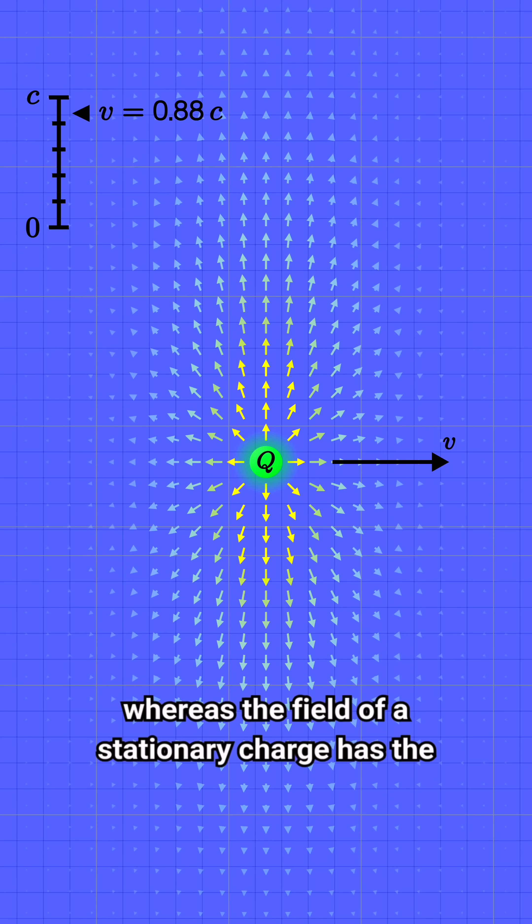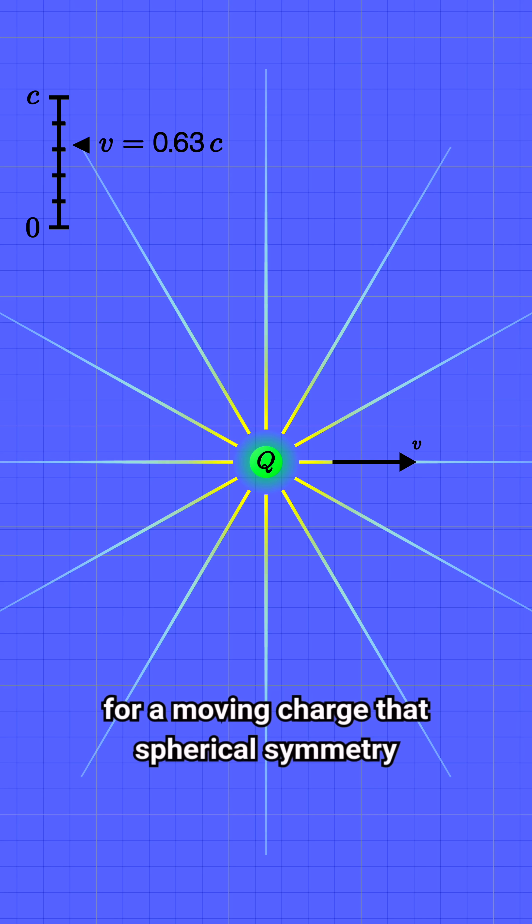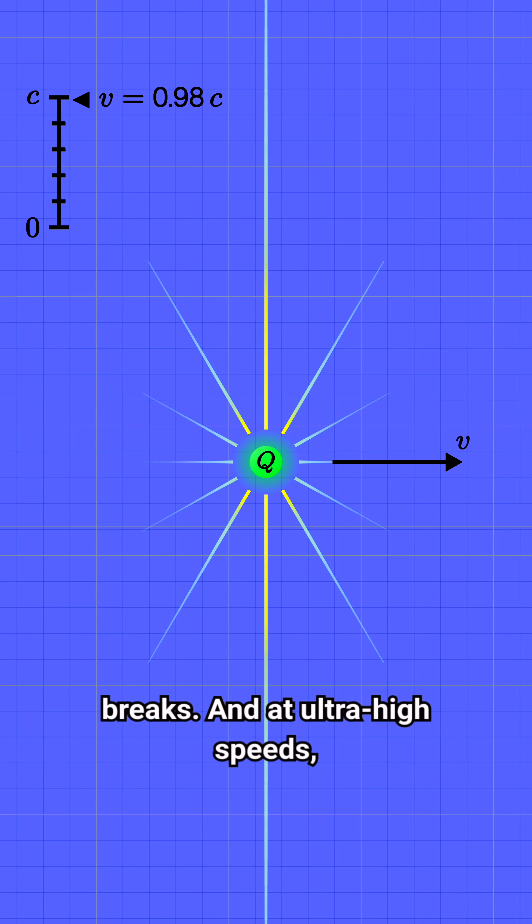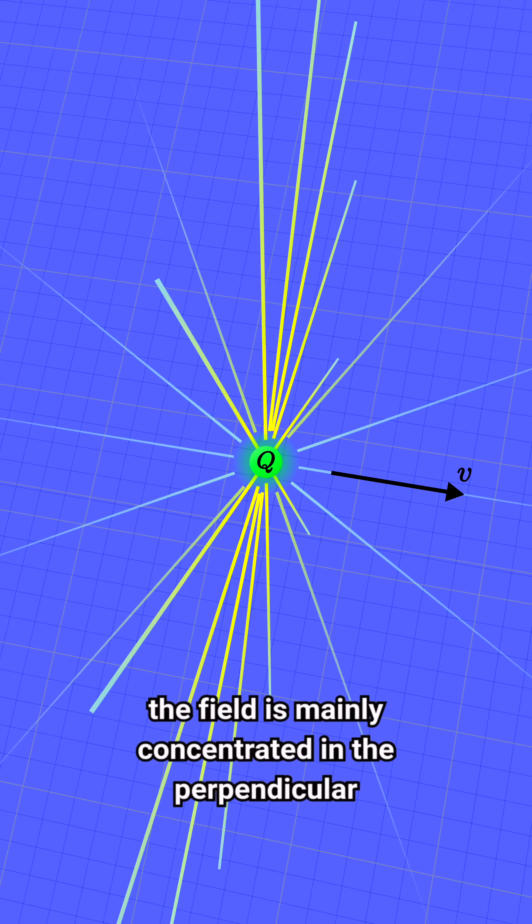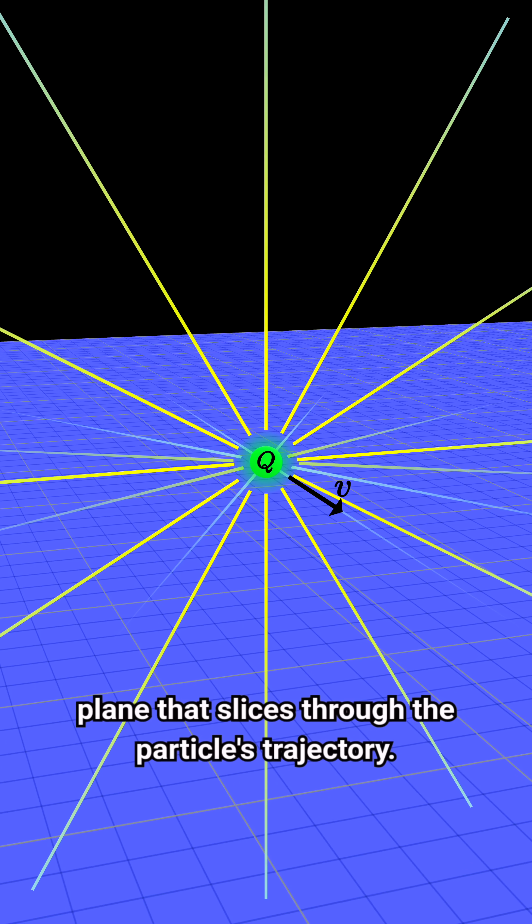In other words, whereas the field of a stationary charge has the same magnitude in all directions surrounding the particle, for a moving charge, that spherical symmetry breaks. And at ultra-high speeds, the field is mainly concentrated in the perpendicular plane that slices through the particle's trajectory.